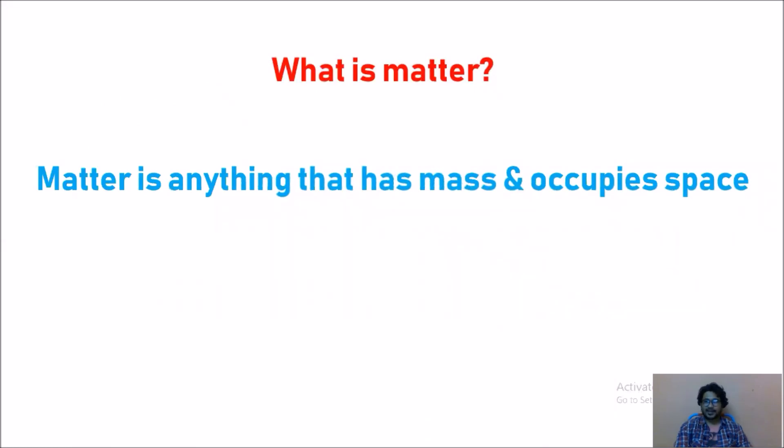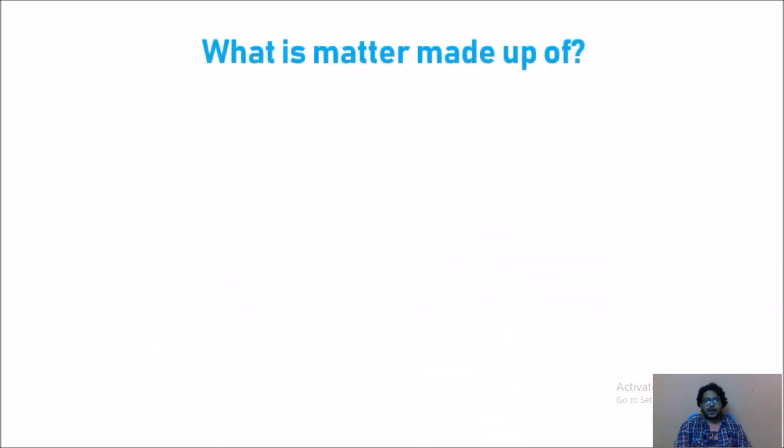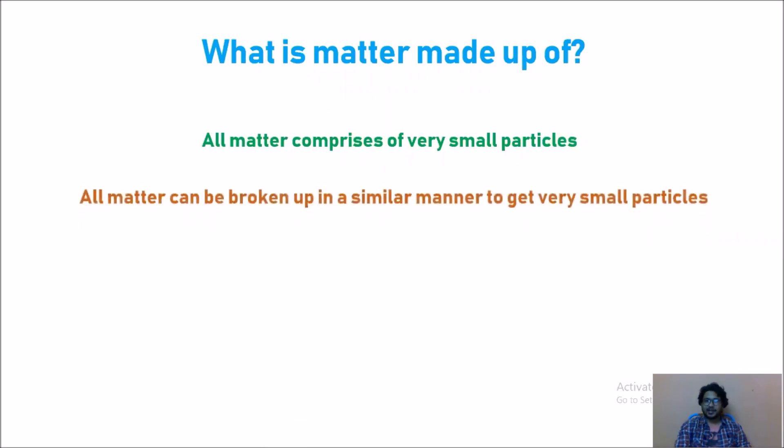So till now what we have read: what is matter? Matter is anything that has mass and occupies space. Now let us look at physical nature of matter. We need to go with the question: what is matter made up of? All matter comprises of very small particles and all matter can be broken up in a similar manner to get very small particles.